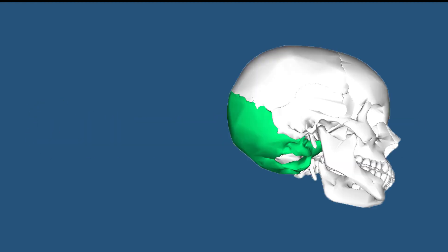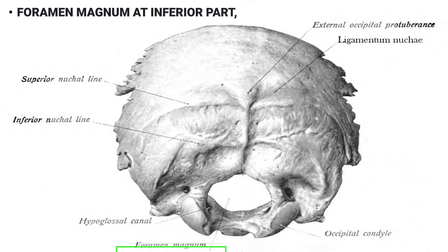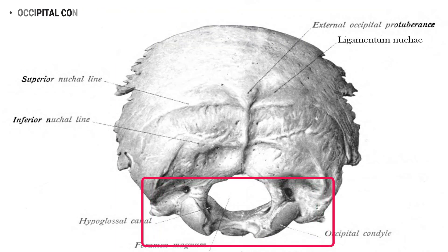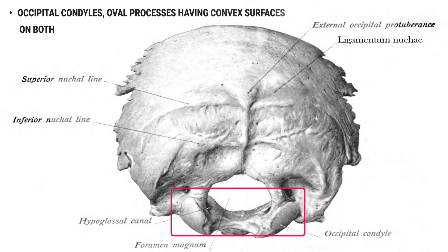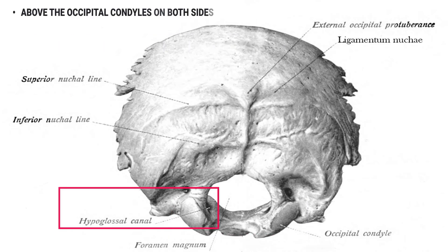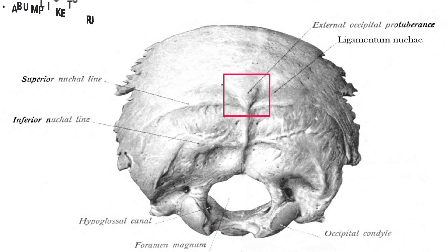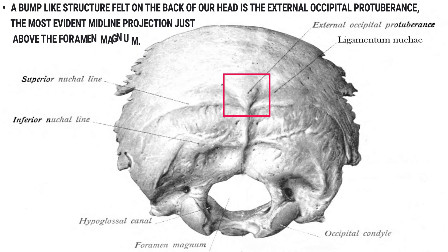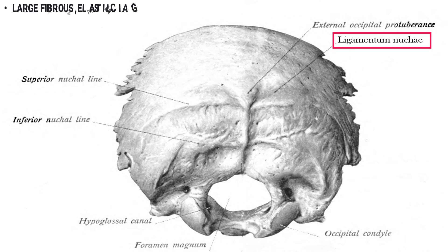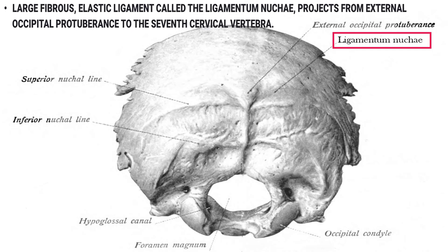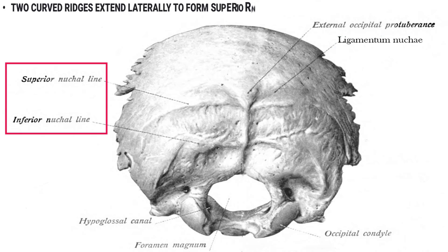The occipital bone forms the posterior and most of the base of the cranium. The foramen magnum at the inferior part helps connect the medulla oblongata with the spinal cord and vertebral column. Occipital condyles, which are oval processes with convex surfaces on both sides of the foramen magnum, articulate with the depressions on the first cervical vertebra, also known as the atlas, to form the atlanto-occipital joint. Above the condyles on both sides, the hypoglossal canal is located. A bump-like structure felt on the back of the head is the external occipital protuberance. The ligamentum nuchae projects from the external occipital protuberance to the seventh cervical vertebra, with superior and inferior nuchal lines extending laterally for muscle attachment.